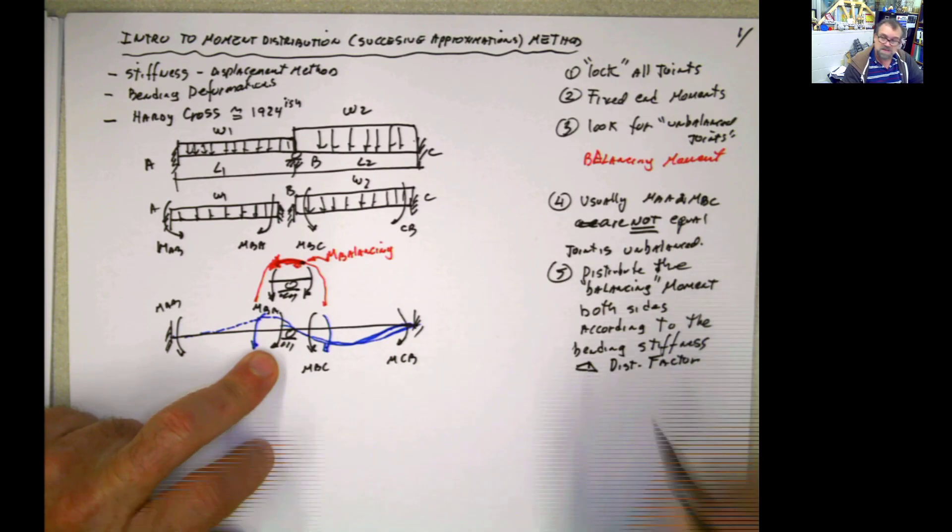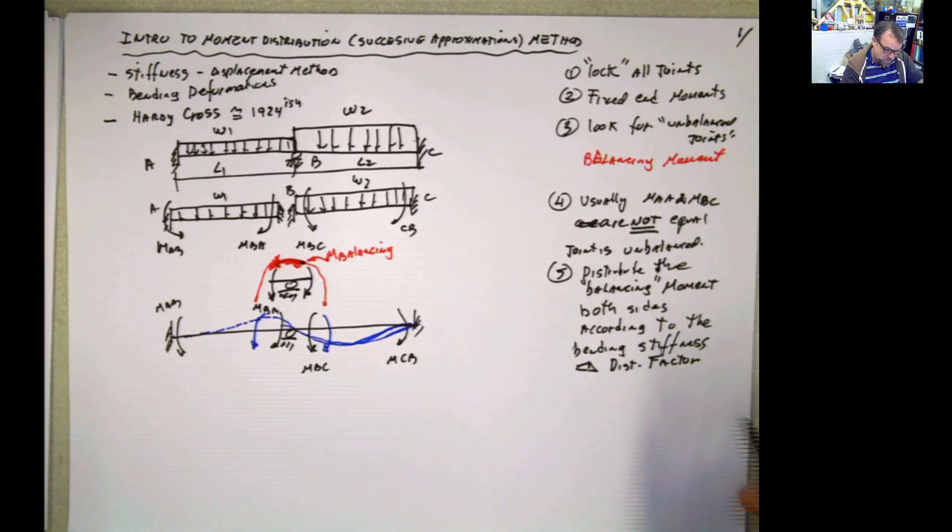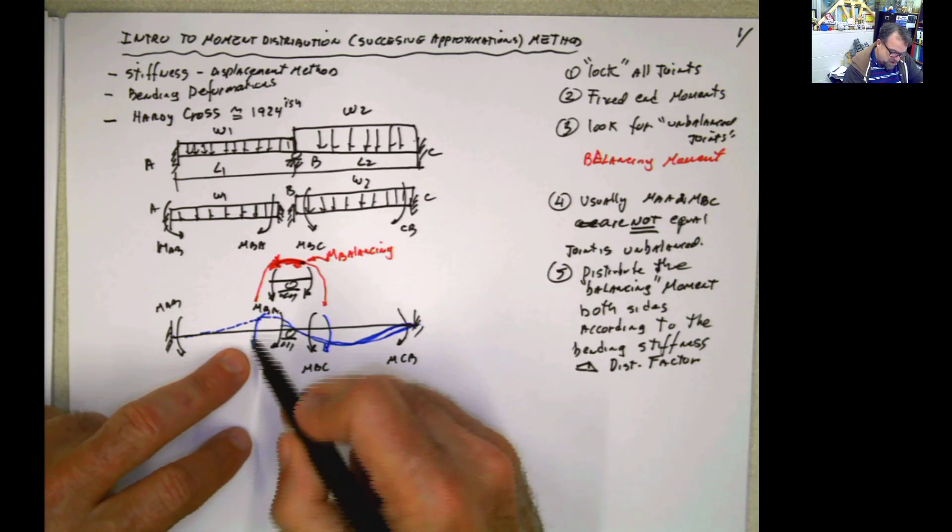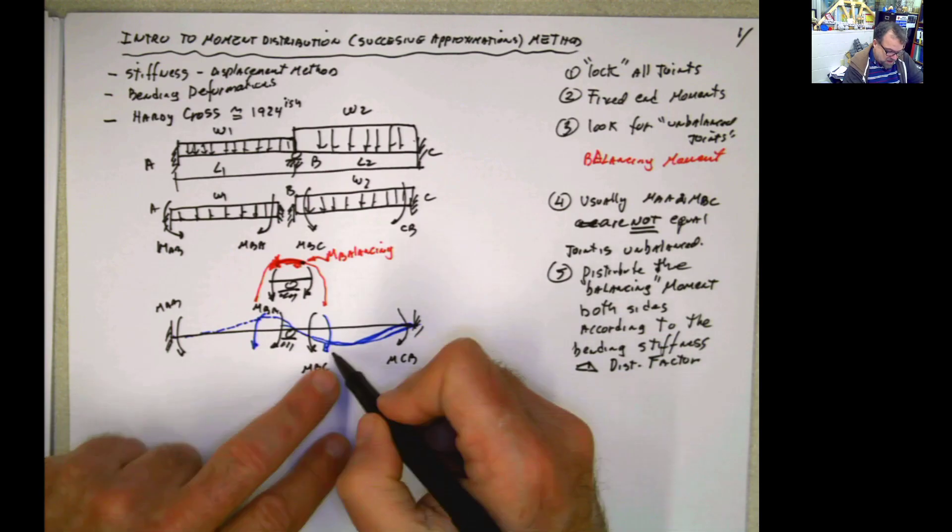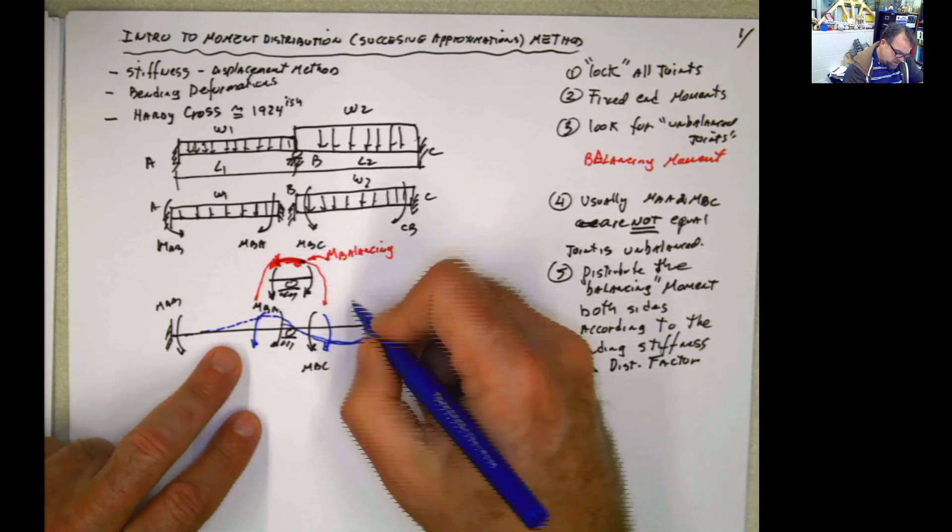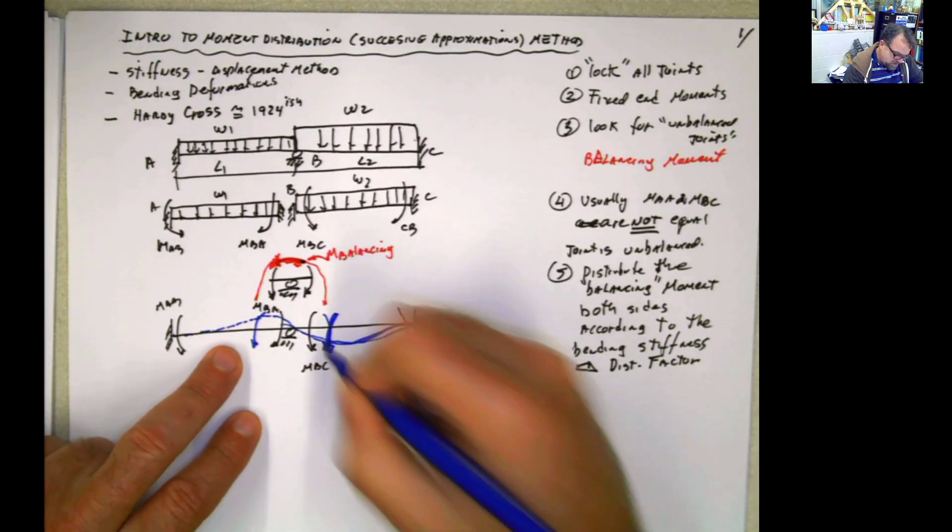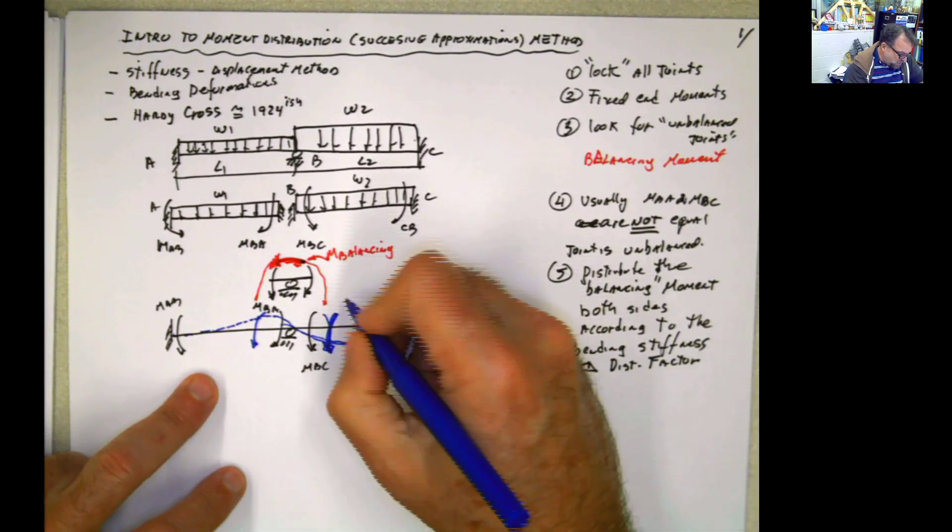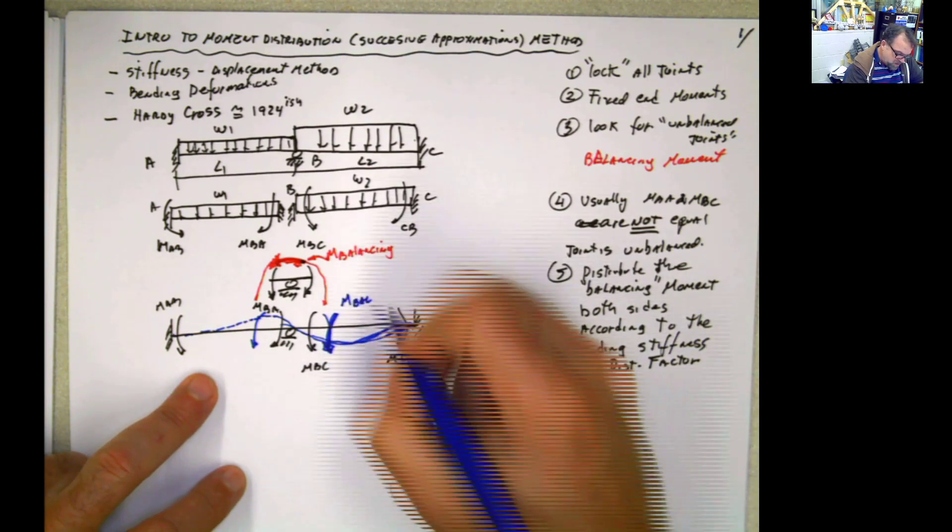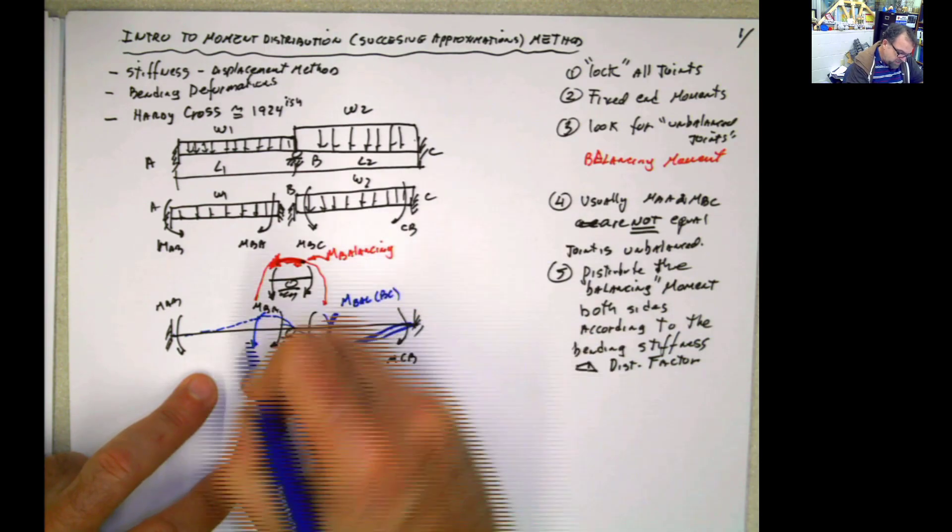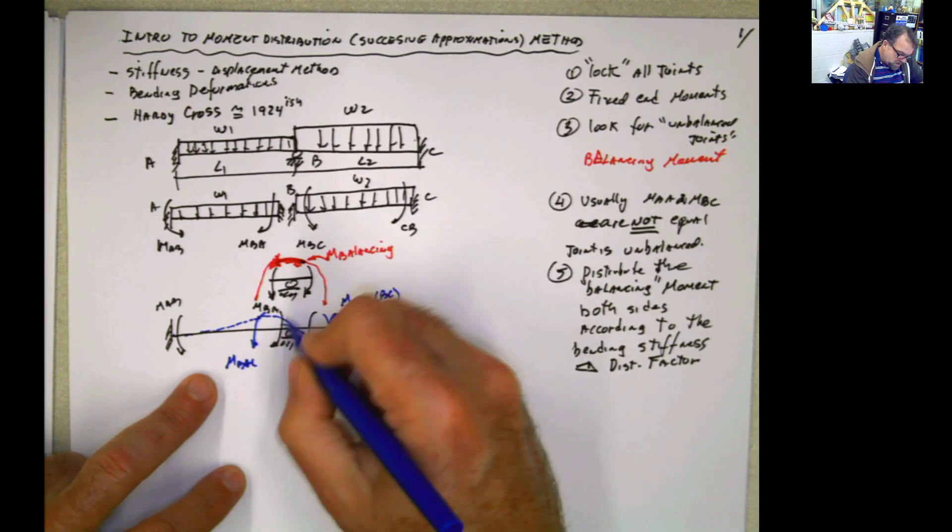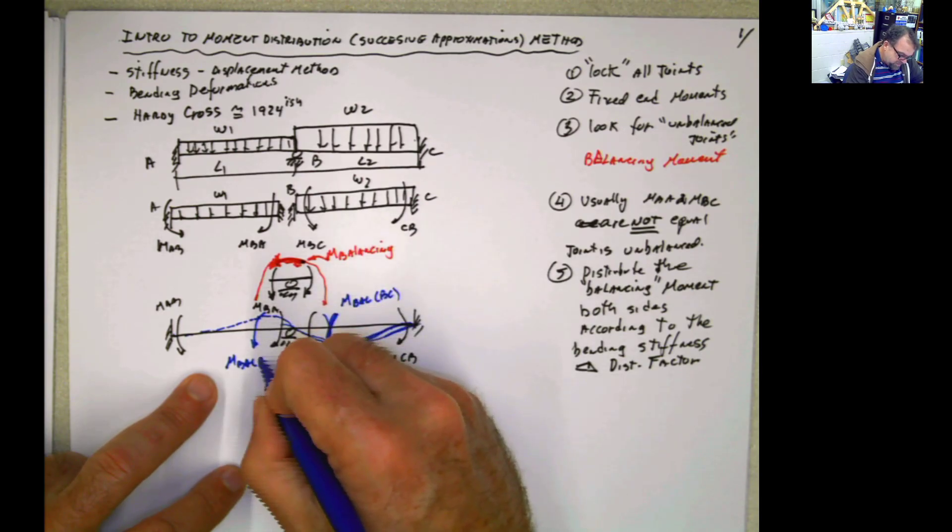Now, you're not going to do that distribution in whatever way you want. You have to do this according to the bending stiffness, which is going to provide for a distribution factor. And in the next video, I'm going to explain you what is the distribution factor. But the distribution factor is only how much of this balancing moment is absorbed by this and how much is absorbed by this other one. And by the way, these moments in the same way like that, same sign.